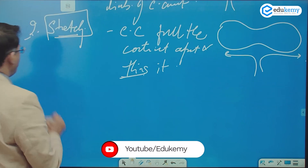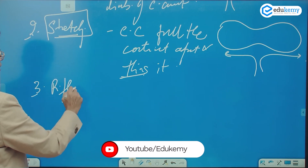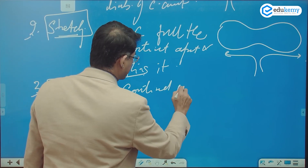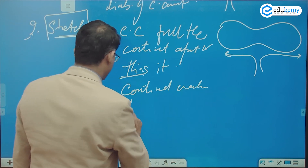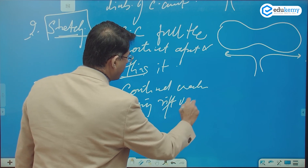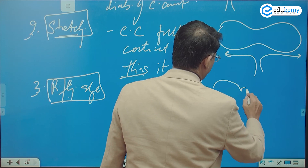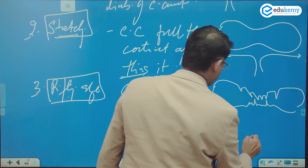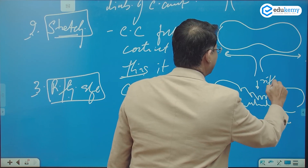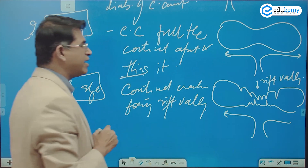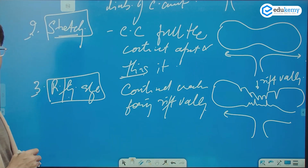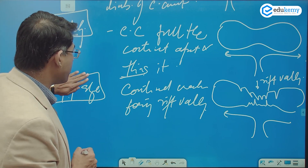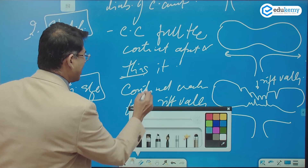The third stage is the Rifting Stage. The continent cracks, forming rift valleys. There will be a series of cracks, some deeper than others, forming rift valleys, and there may also be isolated volcanism at this stage.